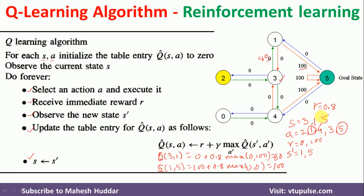The same process must be continued, considering different states as the current state and selecting all possible actions, until the zero entries in the Q-table are replaced with converged values — that is, the final learned policy. In the next video, I will solve the same example completely for each and every edge so we get the final policy. I hope you understood what Q-learning is and how to apply it so the agent can learn the policy.